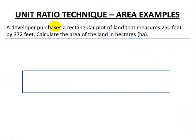Next example, we have a developer who's purchased a rectangular plot of land. We know that the land measures 250 feet by 372 feet, so recognize imperial units. We want to calculate the area of the land, but we want them in hectares, abbreviated HA, and remember this is a metric unit. This is an example where we have to calculate an area and also change from one unit to another.